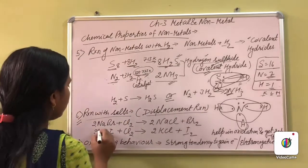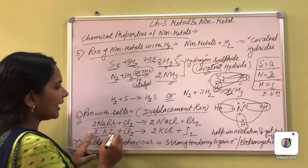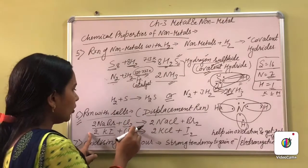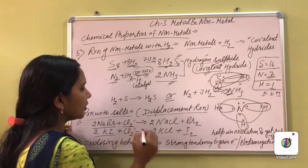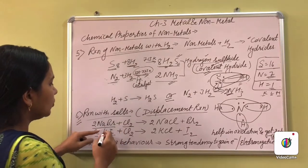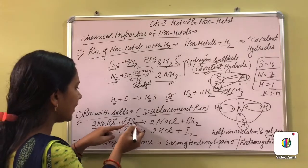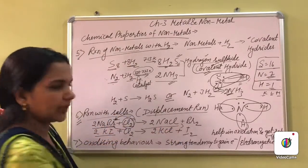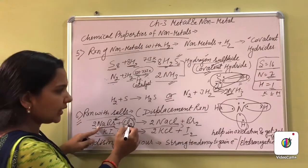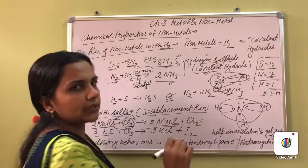For example, there is sodium bromide — that is a salt — and when we add chlorine to it: chlorine is more reactive than bromine, so chlorine will displace bromine. Sodium will combine with chlorine, forming sodium chloride, and bromine will be displaced from its salt solution.